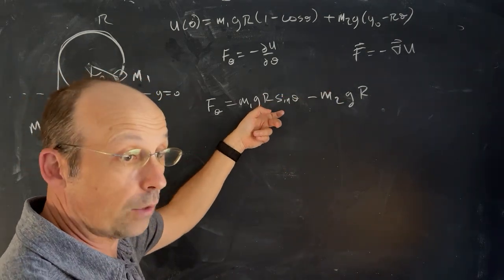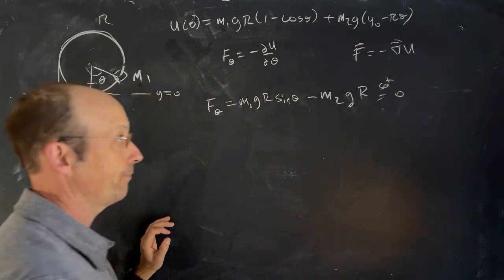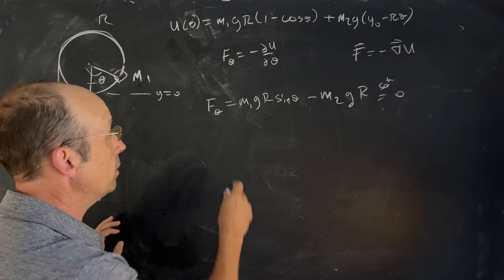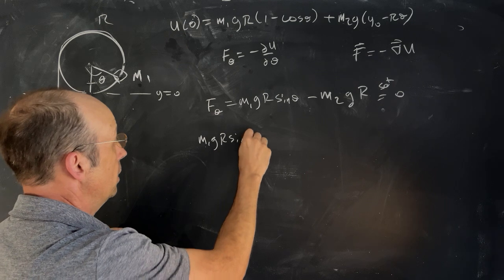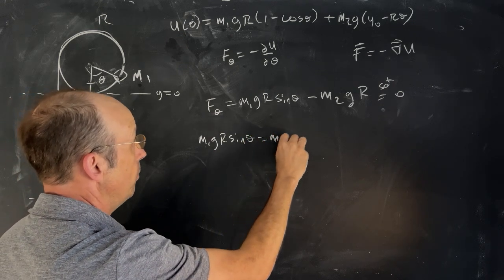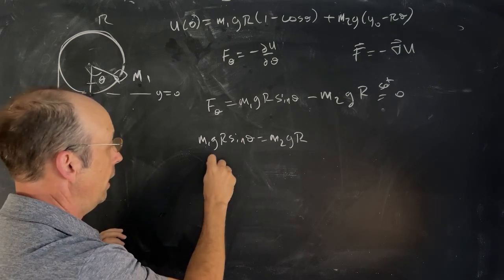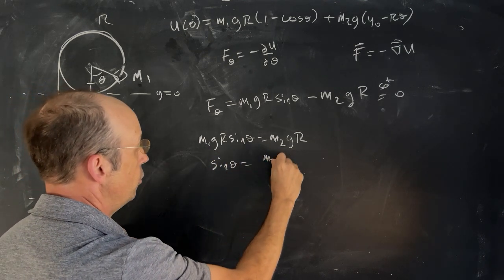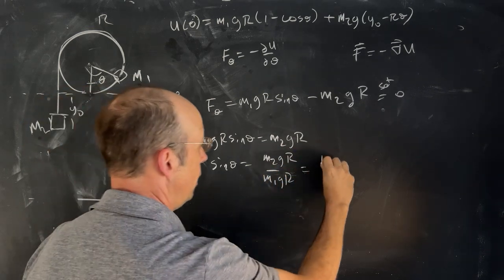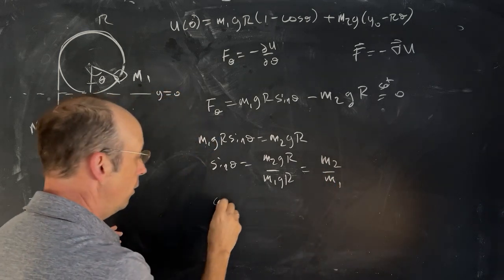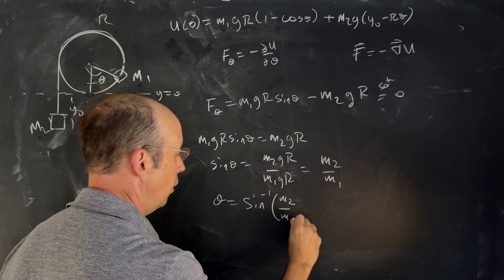And we want to find where this is equal to 0. So we're going to set that equal to 0. So if I do that, I can solve for my value of theta. I get M1gr sine theta equals M2gr. And then I can divide both sides by M1gr. I get sine theta is M2 over M1. Theta is the inverse sine of M2 over M1.